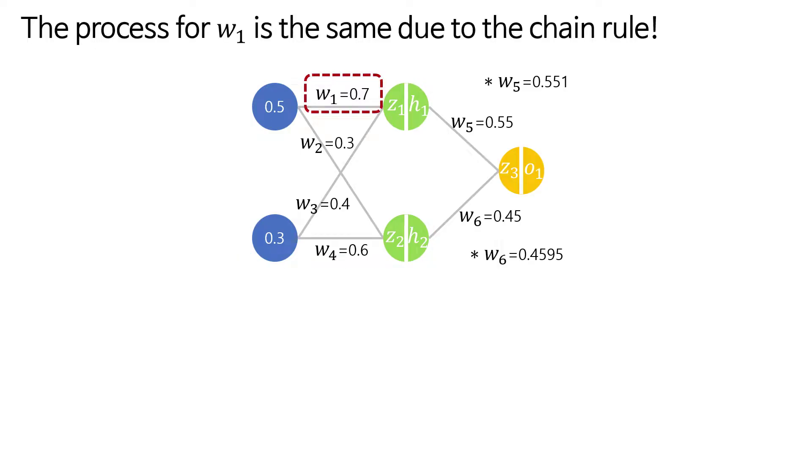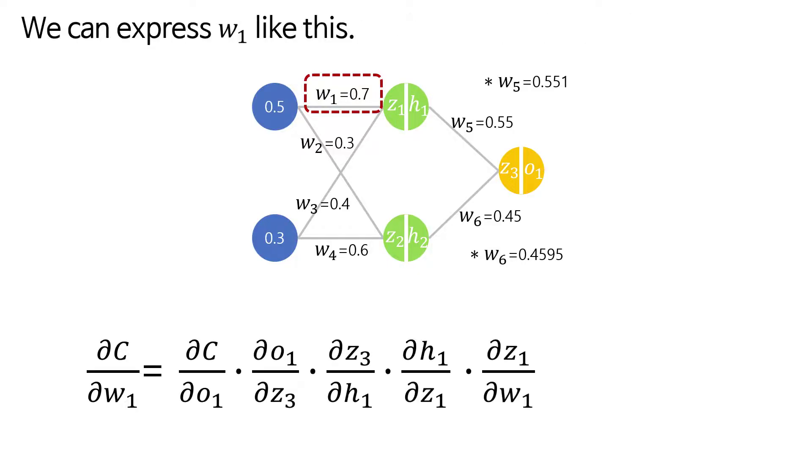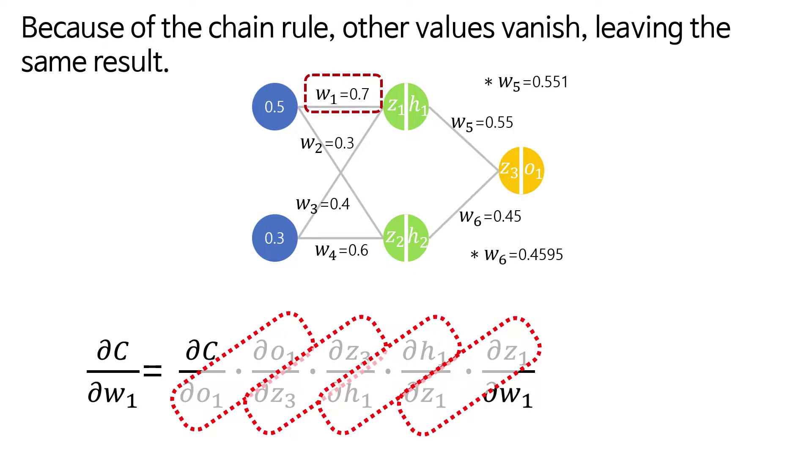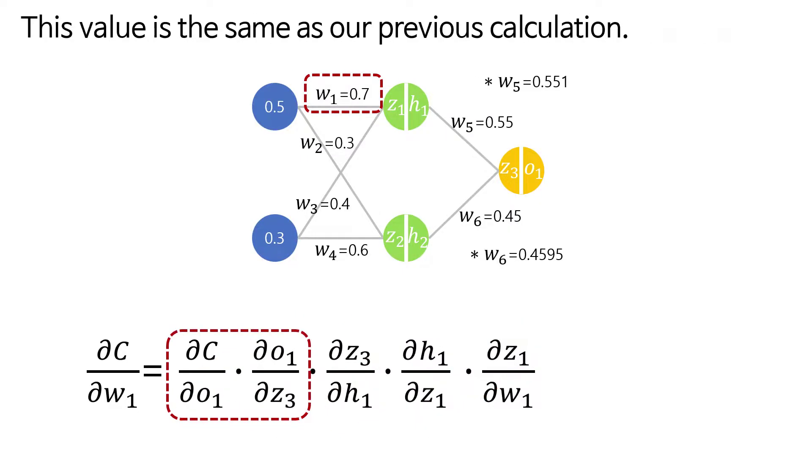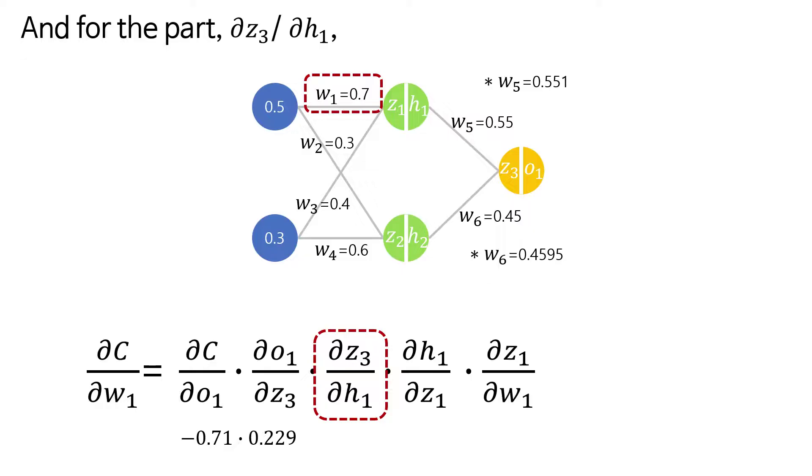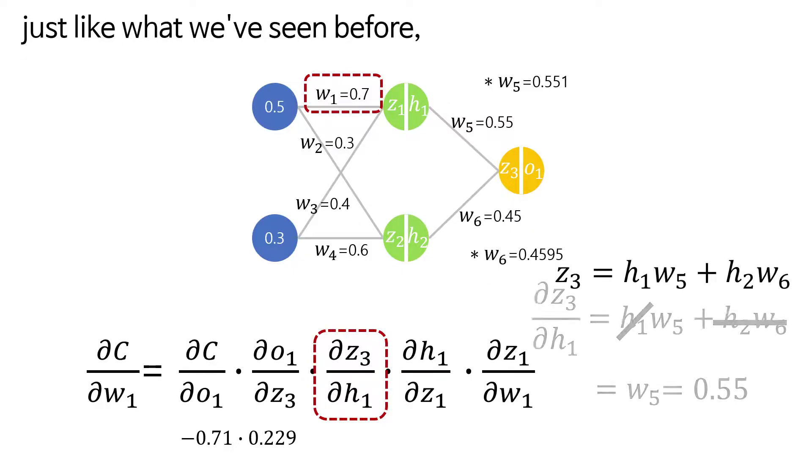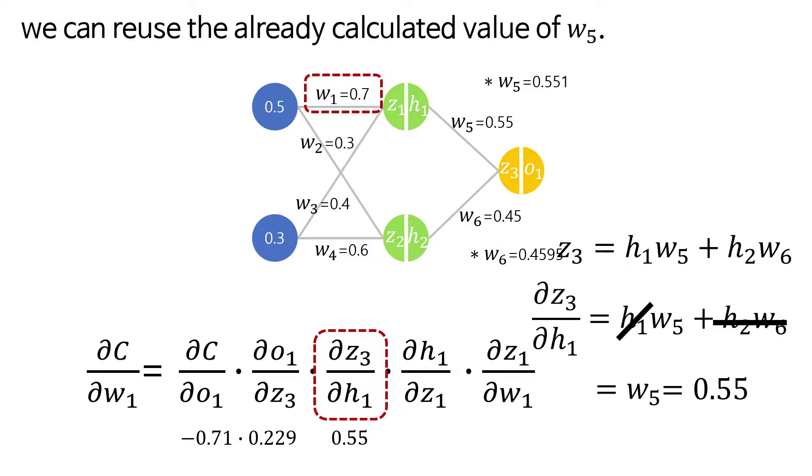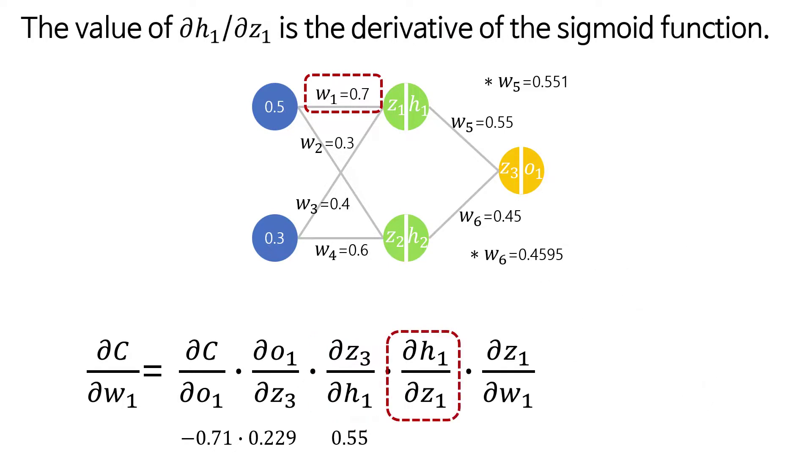The process for w1 is the same due to the chain rule. We can express w1 like this. Because of the chain rule, other values vanish, leaving the same result. This value is the same as our previous calculation. And for the part ∂z3/∂h1, just like what we've seen before, we can reuse the already calculated value of w5. The value of ∂h1/∂z1 is the derivative of the sigmoid function.